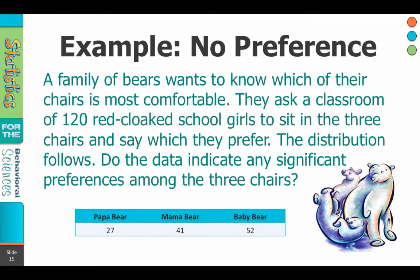So here is our example. A family of bears wants to know which of their chairs is most comfortable. They ask a classroom of 120 red-cloaked schoolgirls to sit in the three chairs and say which one they prefer. The distribution follows. Do the data indicate any significant preferences among the three chairs?